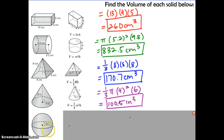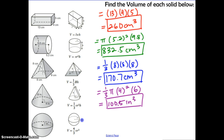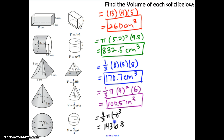Lastly, we have the sphere again. Find the sphere on your formula sheet and substitute in the radius into the formula. The result is 1,436.8 inches cubed.